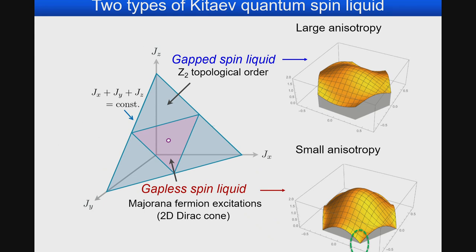There are two types of Kitaev quantum spin liquid states depending on the anisotropy of J_x, J_y, and J_z. In the highly anisotropic case, a gapped spin liquid appears. When the anisotropy is small, a gapless spin liquid with a 2D Dirac cone appears, and that is the regime I'd like to discuss today.